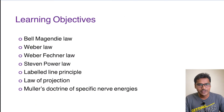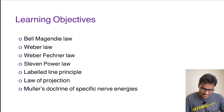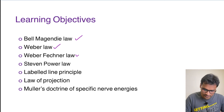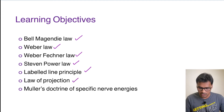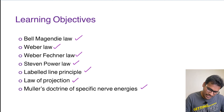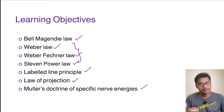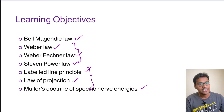Coming to the learning objective of today, we are going to discuss various laws under these headings: the Bell-Magendie law, Weber law, Weber-Fechner law, Steven power law, labeled line principle, law of projection, and Muller's doctrine of specific nerve energy. Weber law, Weber-Fechner law, and Steven power law will be explained together, and labeled line principle, law of projection, and law of specific nerve energy will be discussed together.